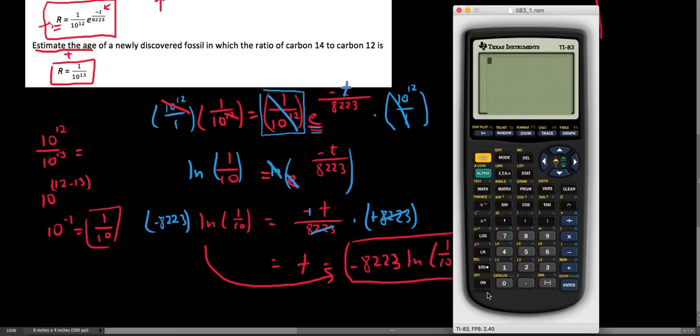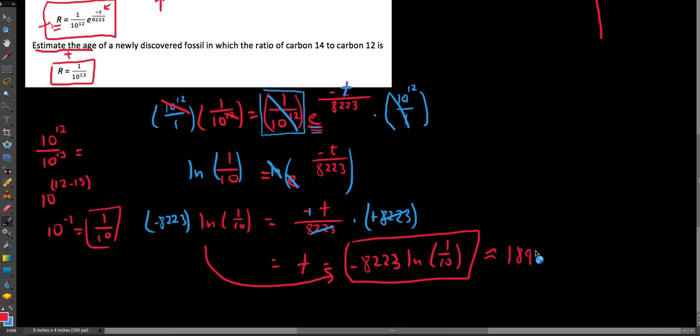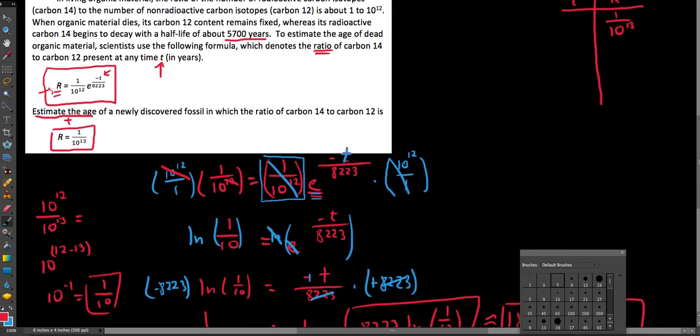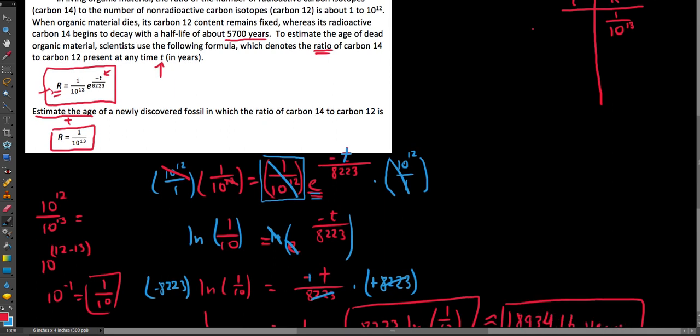And so let's go ahead and put this value into our calculator. We have negative 8223, the natural log of 1 divided by 10. And this should give us a time here, 18,934.16, 18,934.16. And remember that this was a time. And so we're going to label this appropriately. In this case, the model was talking about years. And another thing I'd like to ask you to do is make sure that you put this on your table up here, but we say 18,934.16. But we want to see this relationship on our table as well.